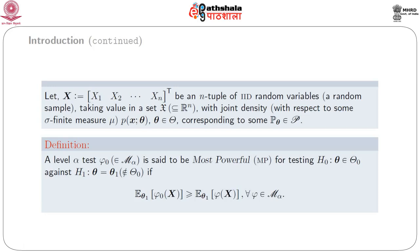Now we give the definition of most powerful test. A level alpha test phi naught belonging to script M_alpha is said to be most powerful (abbreviated MP) for testing H naught: theta belongs to theta naught against the alternative theta equal to theta 1, not belonging to theta naught, if E_{theta_1}[phi_naught(x)] is greater than or equal to E_{theta_1}[phi(x)] for all phi belonging to M_alpha. Most powerful means it has maximum power against a particular alternative theta equal to theta 1 among all tests of level alpha.